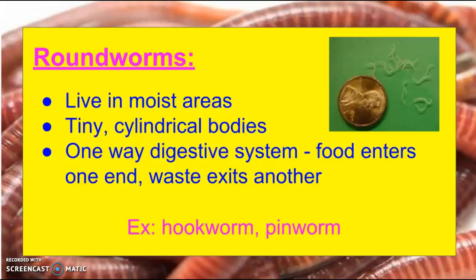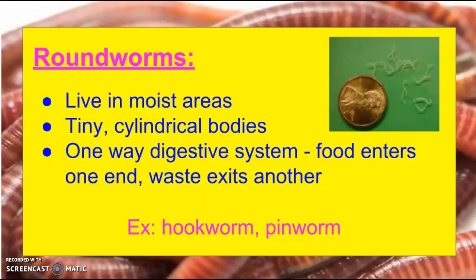So now let's talk about roundworms. Roundworms tend to live in moist areas. They're tiny and they have cylindrical bodies — you can see up here how small they are in comparison to a penny. Roundworms have a one-way digestive system, which means food enters one way and waste exits another, just like humans. Examples of roundworms would be hookworm and pinworm.